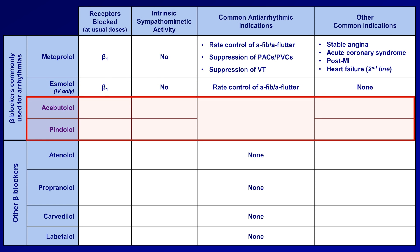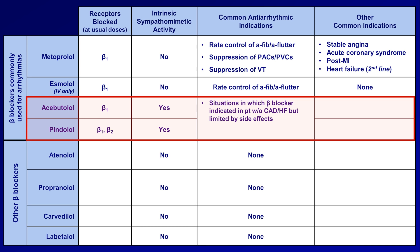Acebutolol and pindolol will be discussed together because they are similar. The major distinction is that acebutolol is cardioselective and pindolol is not. However, they are the only significant beta-blockers with intrinsic sympathomimetic activity, which explains their typical indications. They can be used in situations in which beta-blockers are indicated in a patient without CAD or heart failure, but when their use is limited by side effects such as resting bradycardia. They can also be used for a condition called inappropriate sinus tachycardia, which is when a patient has a resting sinus tachycardia all the time without any clear reason. Patients with this diagnosis tend to be young and particularly prone to feeling poorly on other beta-blockers. These agents are probably more accurately considered second-line, as most doctors would first try a more common beta-blocker and only switch if the patient was intolerant.